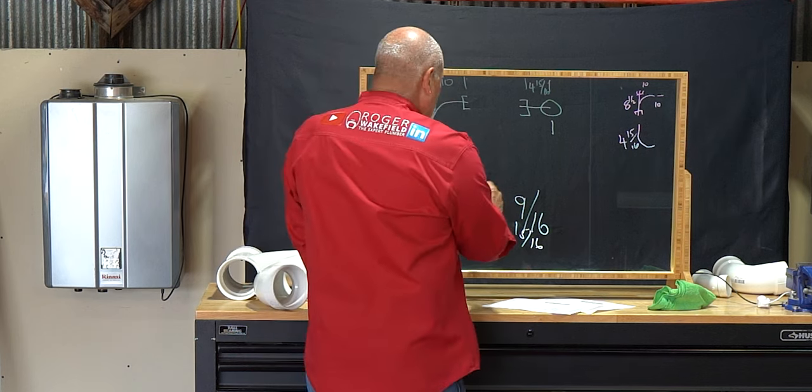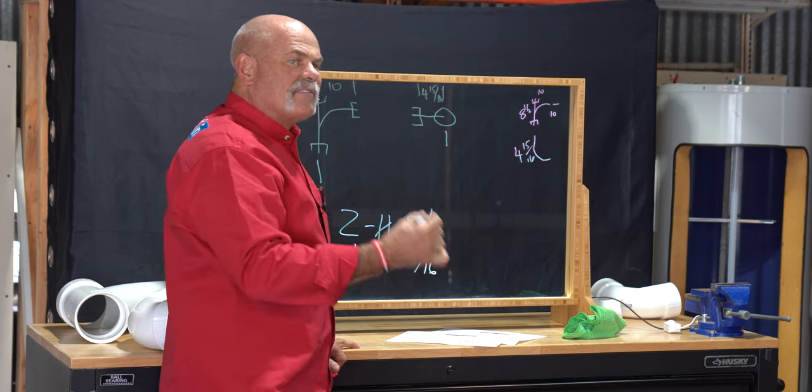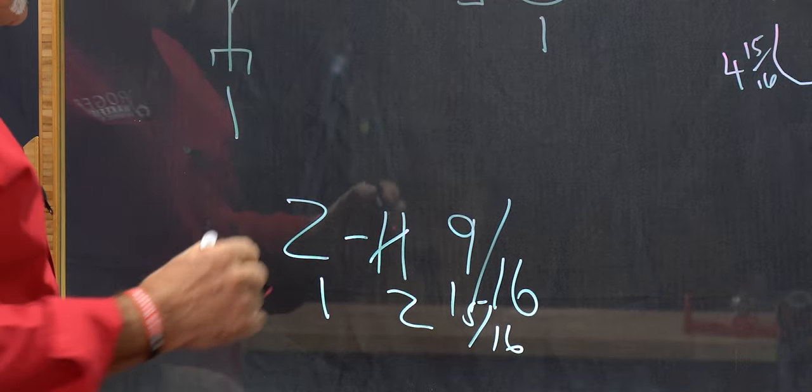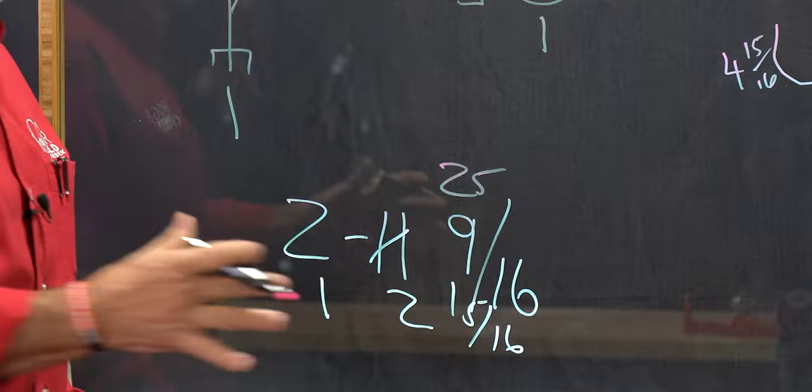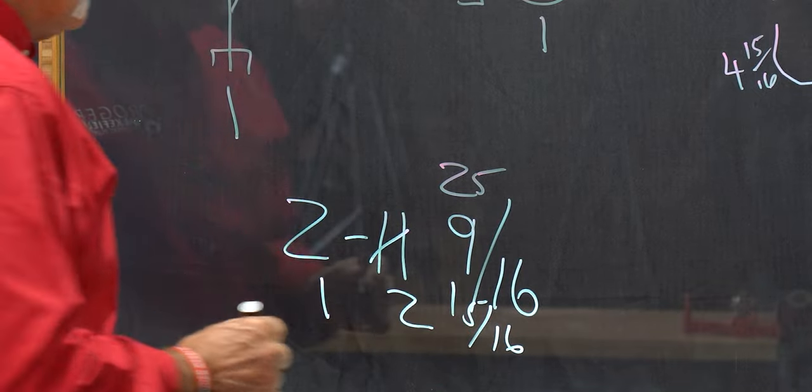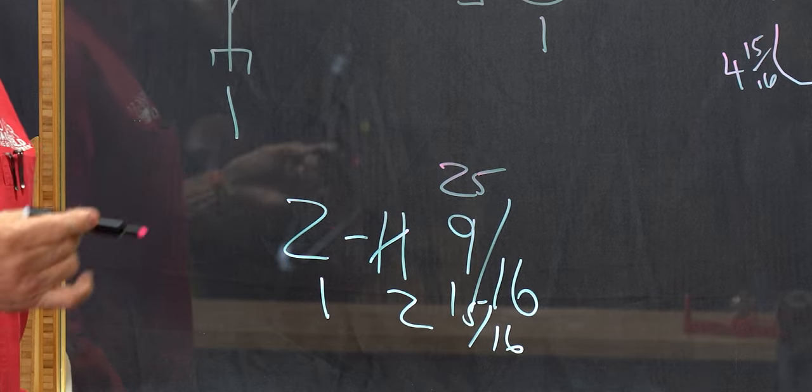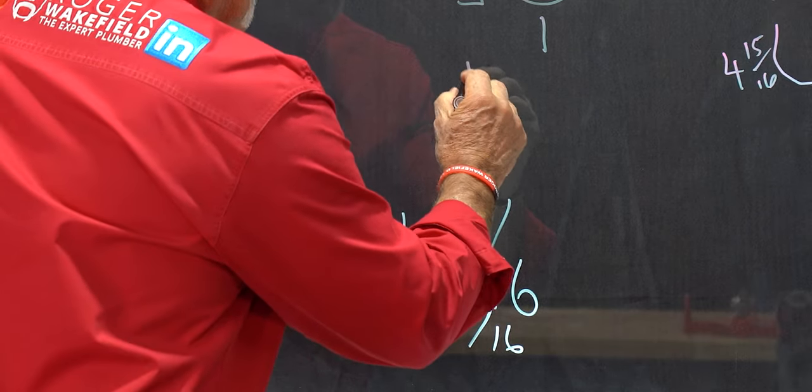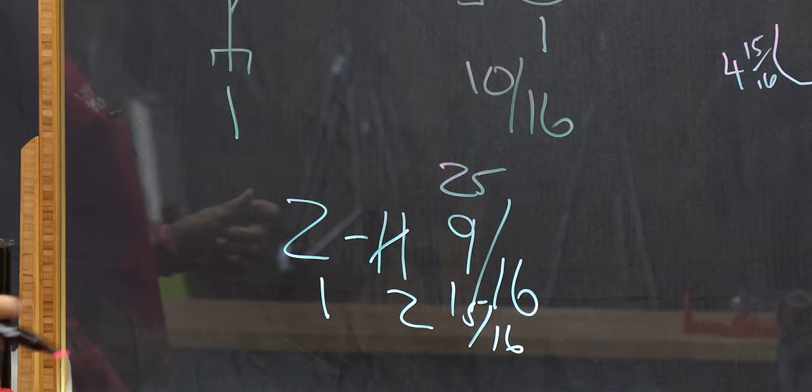What I'm going to do, I'm going to borrow from my 11 inches to get this above 15 sixteenths. So I'm just going to add 16 to the nine. So 16 and nine, I've got 25. The 16 stays the same. So I'm good there. So I subtract 15 sixteenths from 25 sixteenths, and I get 10 sixteenths.